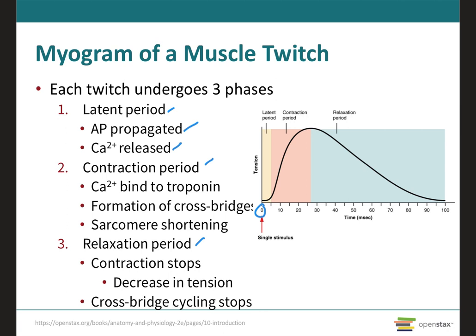During the contraction period, which usually lasts between 10 to 100 milliseconds, calcium binds to troponin and the myosin binding sites on the actin are exposed because troponin moves away. The myosin cross bridges are then able to form as the myosin head attaches to the binding sites on the actin, and as a result a peak tension develops in the muscle fiber.